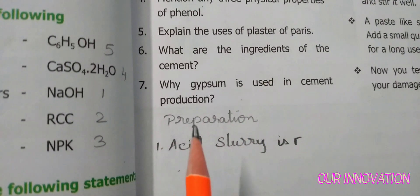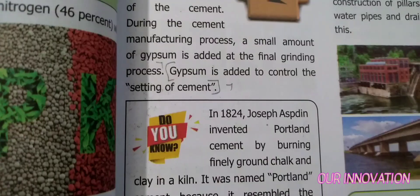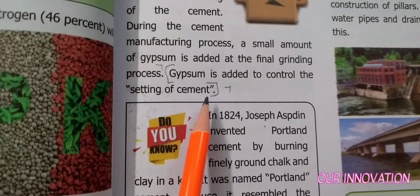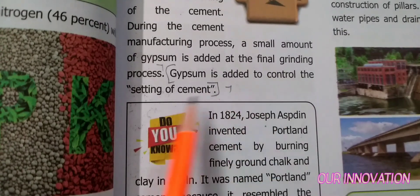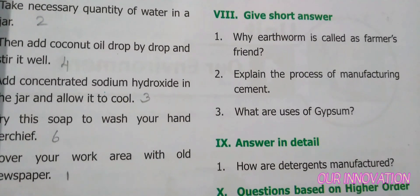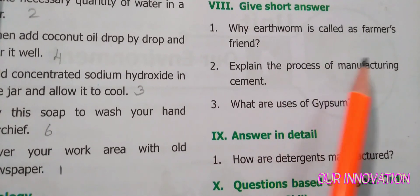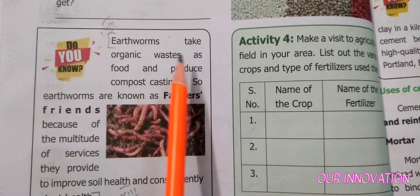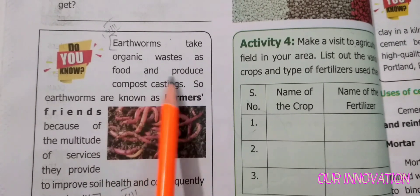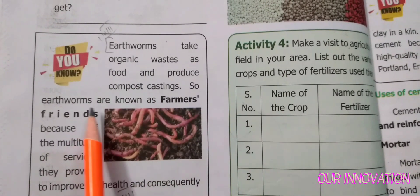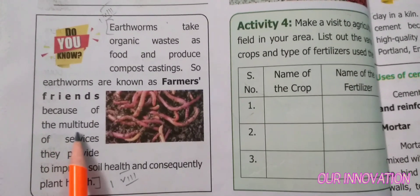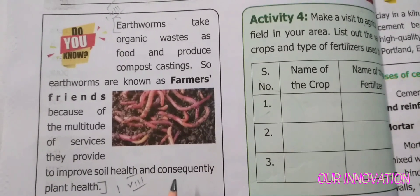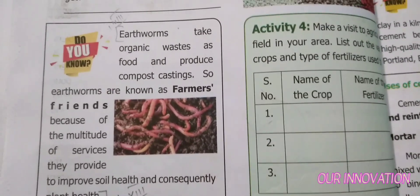Question: Why is gypsum used in cement production? Answer (page 39): Gypsum is added to control the setting of cement. Question: Why is earthworm called the farmer's friend? Answer (page 38): Earthworms take organic waste as food and produce compost castings. Earthworms are known as the farmer's friend because of the multitude of services they provide to improve soil health and consequently plant health.